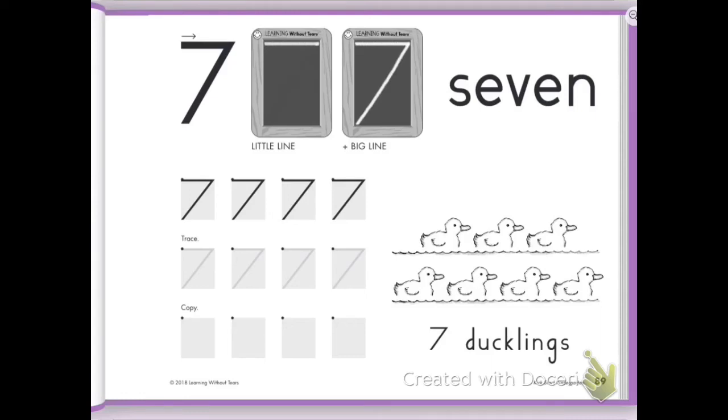Hi friends, today we're going to write the number seven, the handwriting without tears way. And as you can tell, we just need two lines, a little line on top and a big line that slides down.